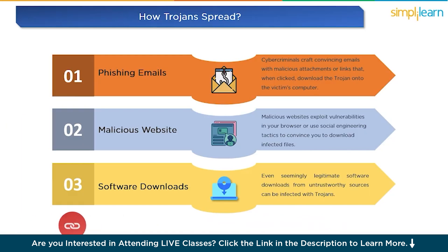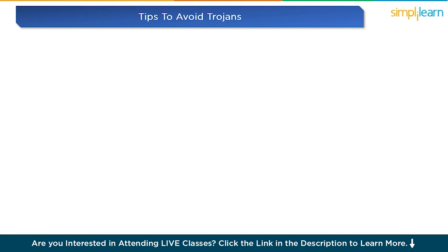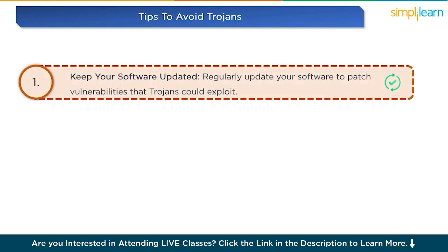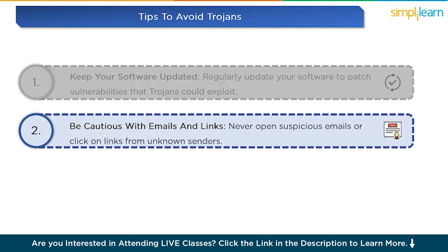Now that we understand the potential risks, let's explore some essential tips to protect ourselves from Trojans. Number one: keep your software updated. Regularly update your operating system, web browsers, and security software to patch vulnerabilities that Trojans can exploit. Number two: be cautious with emails and links. Never open suspicious emails or click on links from unknown senders, and verify the sender's identity before opening any attachment.